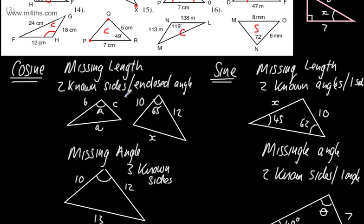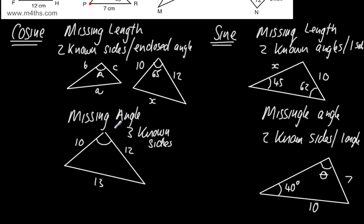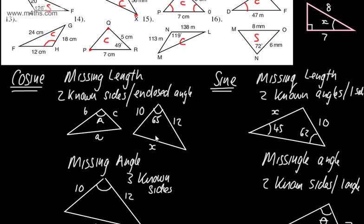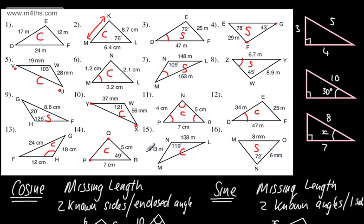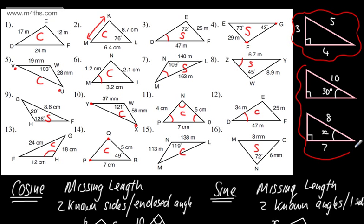Let's recap: we use the cosine rule to find a missing length when we have two known sides and an enclosed angle, and to find a missing angle when we have three known sides. For the sine rule, we find missing lengths given two known angles and one side, and missing angles given two known sides and one angle. Don't forget that Pythagoras theorem and the trig ratios are still valid for right-angle triangles — they're easier to use in those cases. In the next video, we'll start looking at the sine rule.